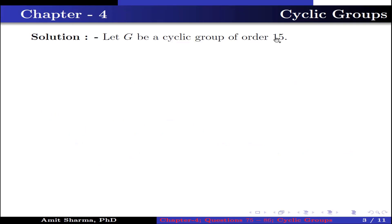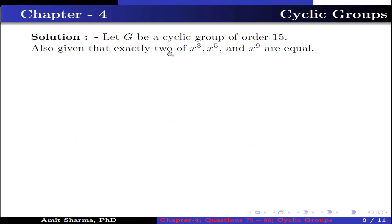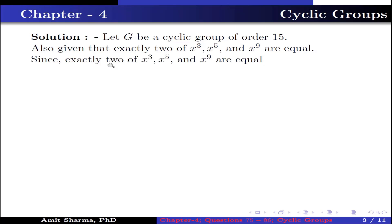Let G be a cyclic group of order 15. Given that exactly 2 of X³, X⁵, and X⁹ are equal — meaning either X³=X⁵, or X⁵=X⁹, or X³=X⁹. Since exactly 2 are equal, X is not the identity; otherwise all three would be equal.